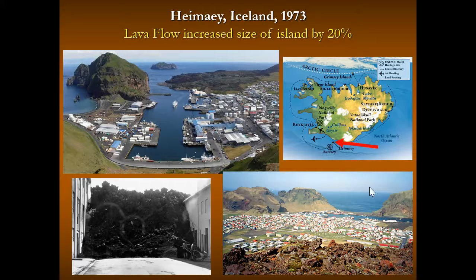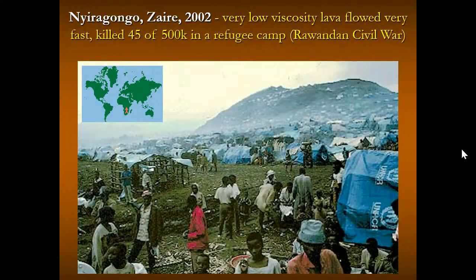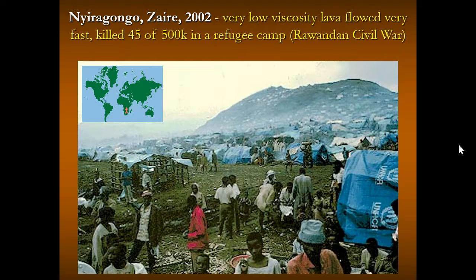Here's Heimaey and the town overlooking, where you can see the lava flows that came in and hemmed in on different sides of the town. A rare lava flow killed several refugees during the Rwandan civil war — many refugees were on the mountainside of a volcano in Zaire when it erupted with a really fast lava flow. With half a million people in the area, it killed 45 people — a very rare instance, but nonetheless dangerous.